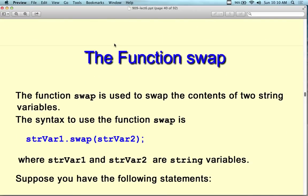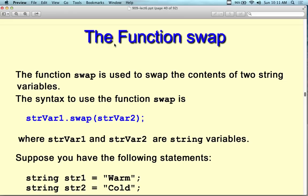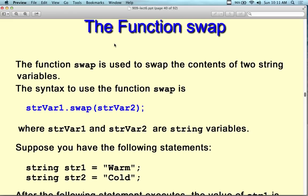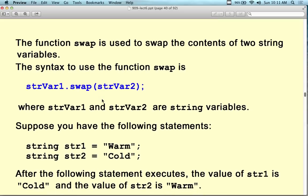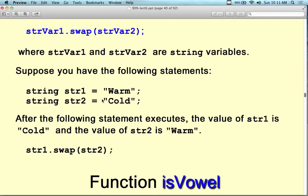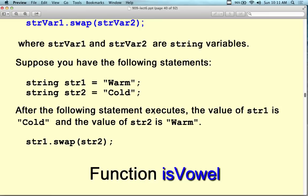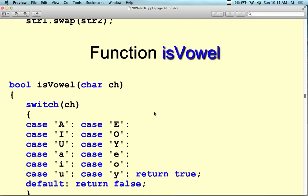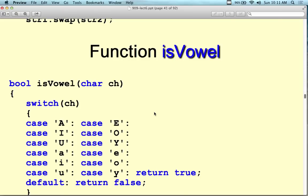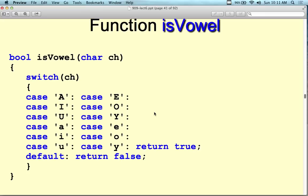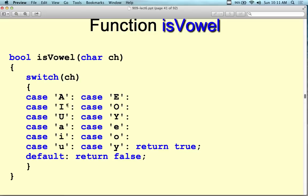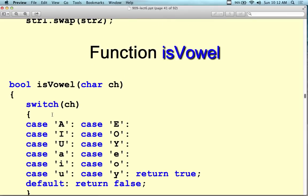We also have the swap method, which swaps the contents of two string variables. Syntax: string_variable1.swap(string_variable2). If string1 is 'warm' and string2 is 'cold', after string1.swap(string2), the value of string1 is 'cold' and the value of string2 is 'warm'. There's also an isVowel function that checks if a character is A, E, I, O, or U — both capital and lowercase — returning true or false. And there are toUpper and toLower functions to convert case.